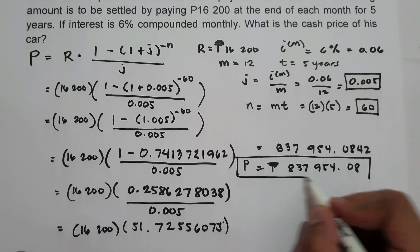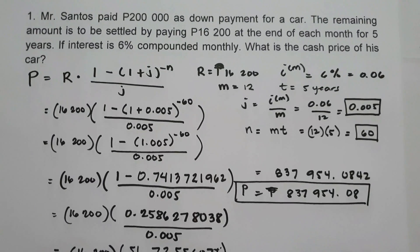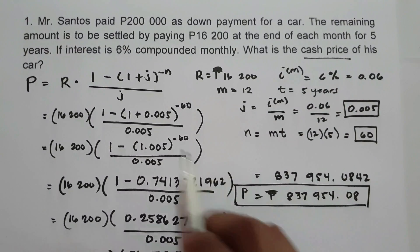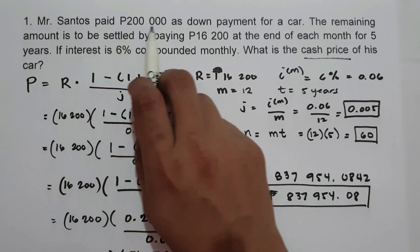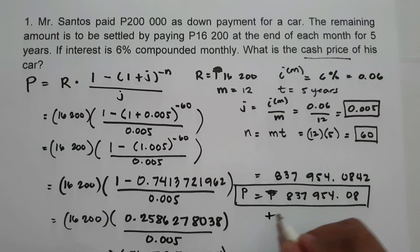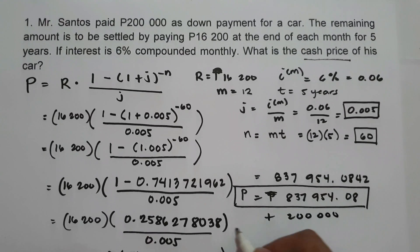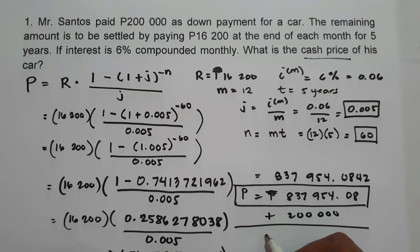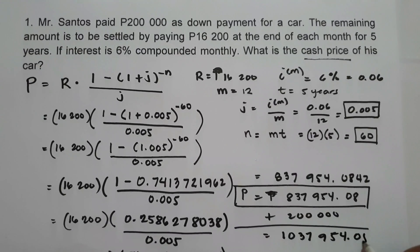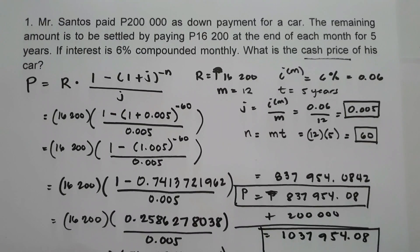But the question asks for the cash price of his car. Since Mr. Santos paid 200,000 pesos as down payment, we add 200,000 to the present value. Therefore, the cash price of his car is 1,037,954.08.